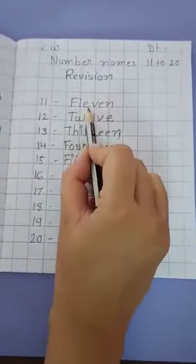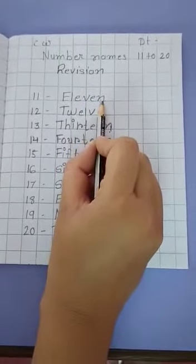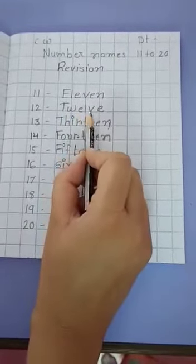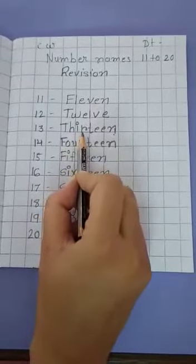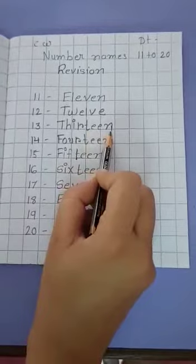E-L-E-V-E-N, 11. T-W-E-L-V-E, 12. T-H-I-R-T-double-E-N, 13.